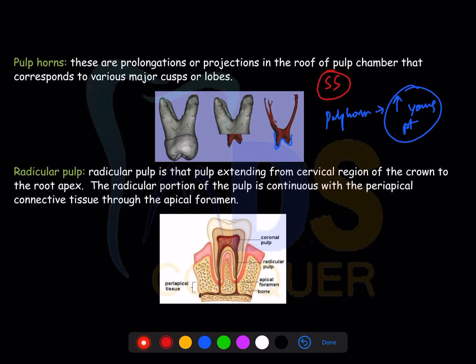Once dentin deposition is done and the pulp horns drop down, we plan for a permanent restoration. Stainless steel crowns are considered semi-permanent crowns given to young permanent teeth, followed by proper dentin deposition and dropping of pulp horns, before placing a permanent crown. Be very careful while preparing cavities in young permanent teeth because pulp chambers are very high and there is a high chance of pulp exposure.